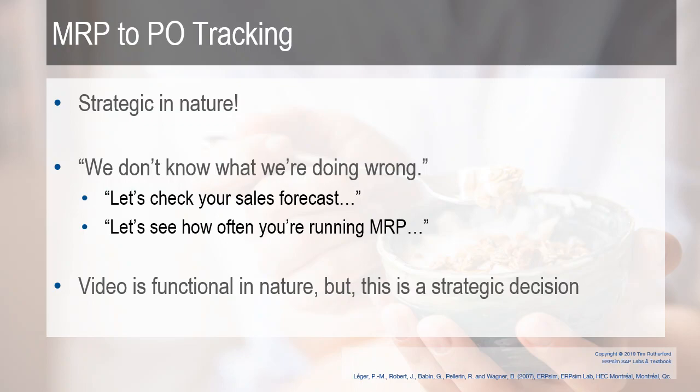This is going to cover MRP to PO tracking — the purchase order tracking. Now realize this is strategic in nature. When I have students who say things like, we don't know what we're doing wrong, we don't know why we have low profit or company valuation is low — the first thing I ask, covered in video 1, is let's check your sales forecast. The second thing I ask is let's see how often you're running MRP.